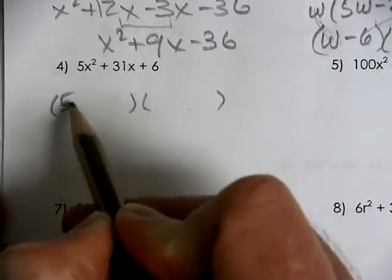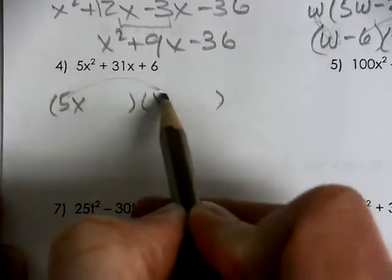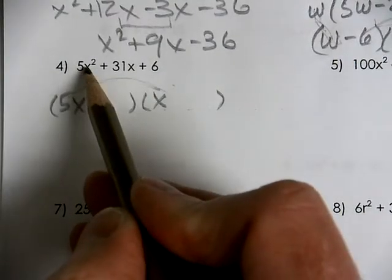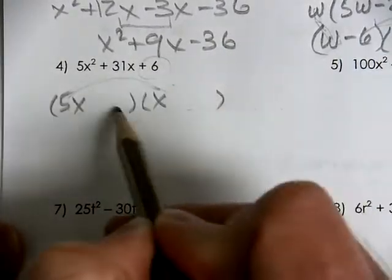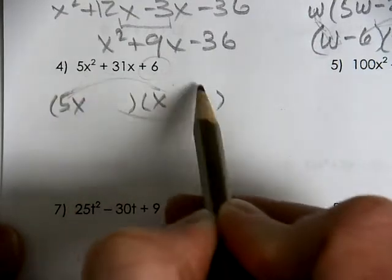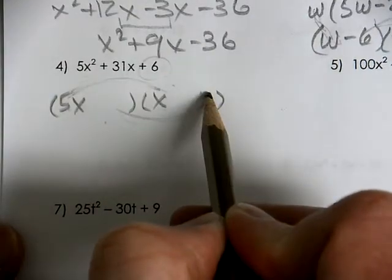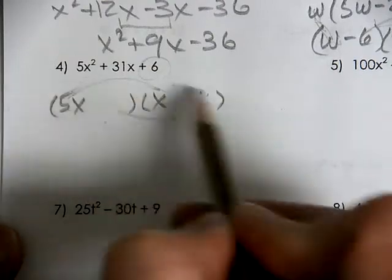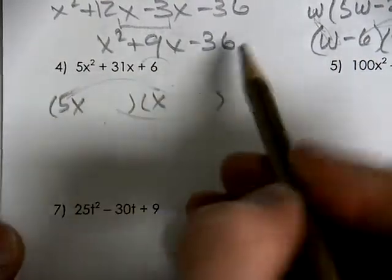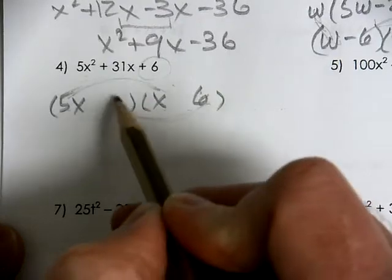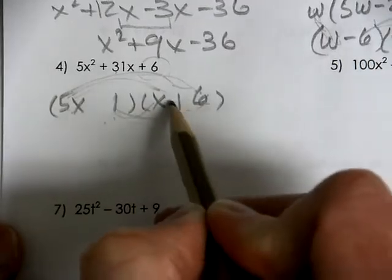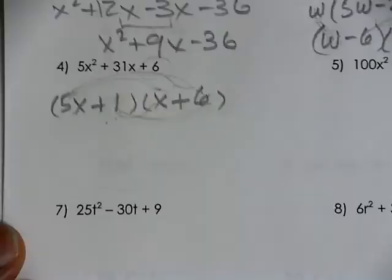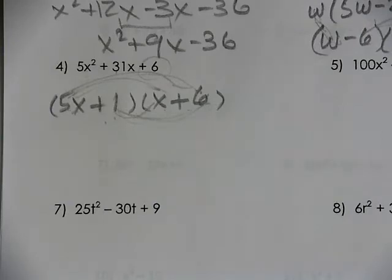For number 4, 5x times x gives 5x squared. Now you need to get up to 31, so you have to multiply to be 6. It won't be 3 and 2 because 15 plus 2x doesn't get you to 31. So trying 6 and 1: that's 30 plus 1, which gives 31. It would be a positive 6 and a positive 1. We guessed with some numbers and then checked to be sure they balanced out.